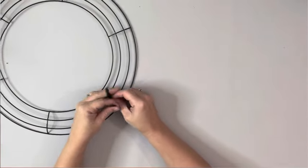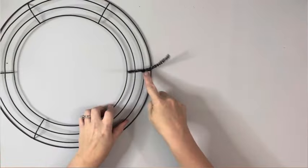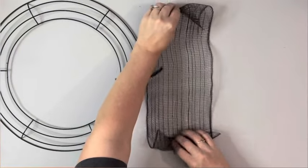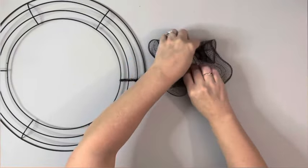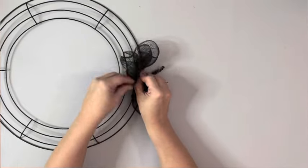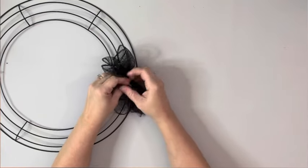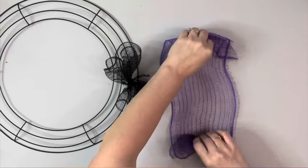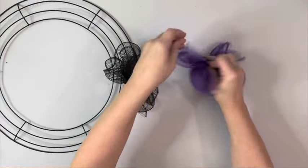And to start the wreath, I took a pipe cleaner that I cut in half, wrapped it around the third ring from the center, took this black mesh, kind of rolled each end and then walked my fingers until they met in the center, just pinching and ruffling it up. And then putting it in between that pipe cleaner and twisting it.